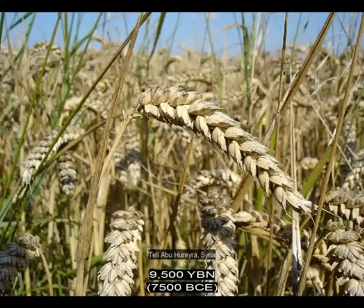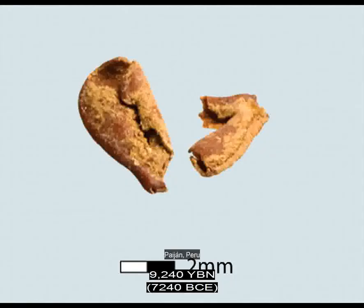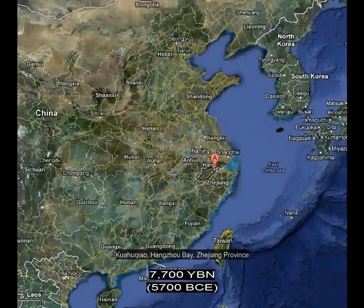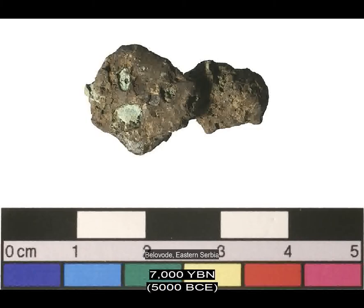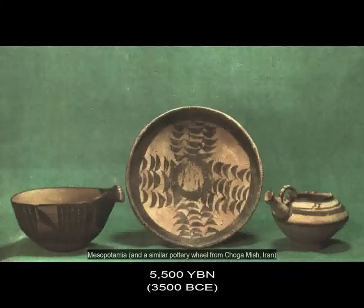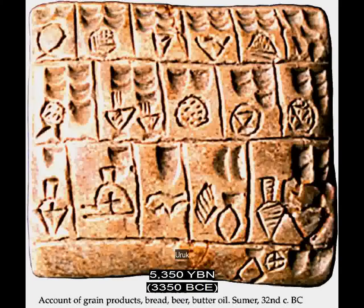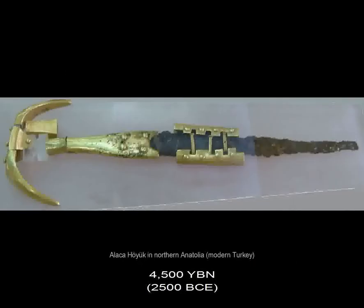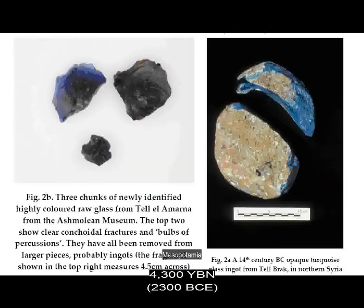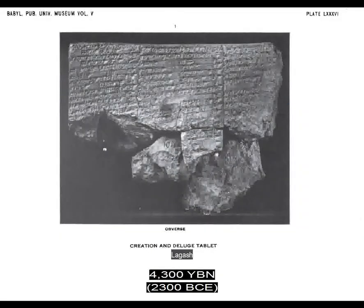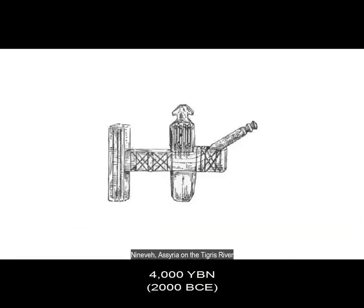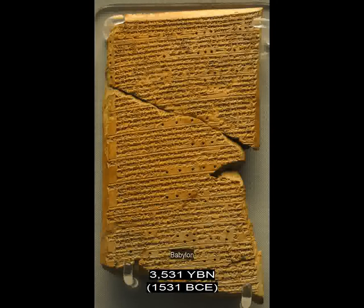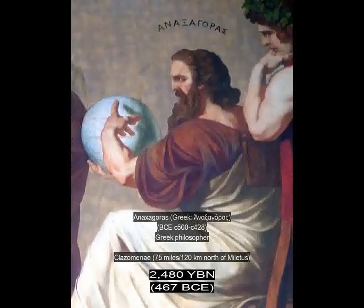First city. Wheat grown. Squash grown. Rice grown. Metal casting. Copper. The wheel. Writing on clay tablets. Animal-pulled vehicles. Iron casting. Glass making. Written story. Lock and key. Planets recognized. Earth described as a sphere. That stars are other suns is known.